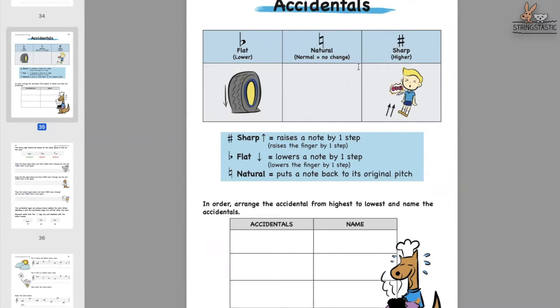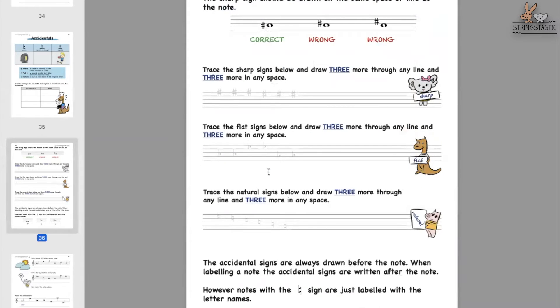Now let's look at how to draw sharps and flat signs. A lot of students tend to draw the accidentals anywhere they want, whether through the line or in the space. This is how I explain it — I love using props. What I've done is taken bowls and put signs on them, either a sharp or a flat sign.